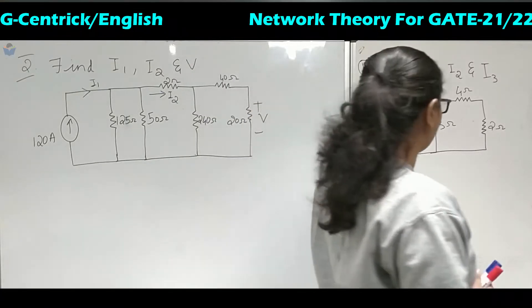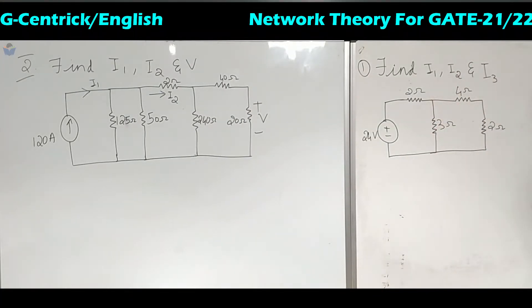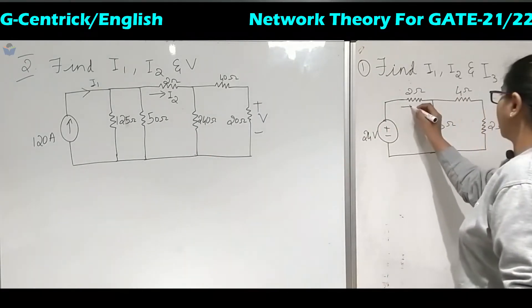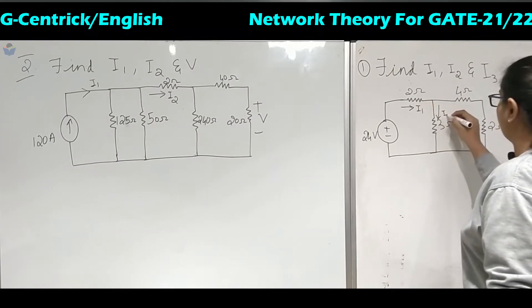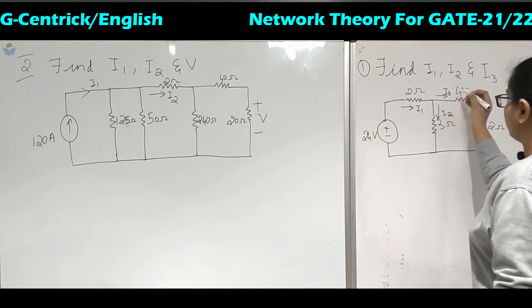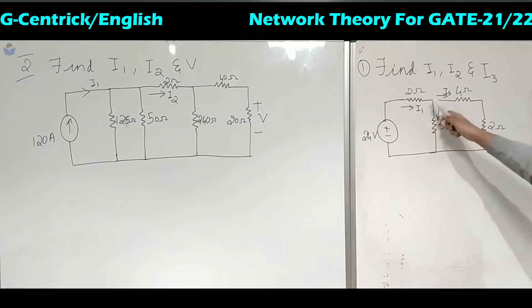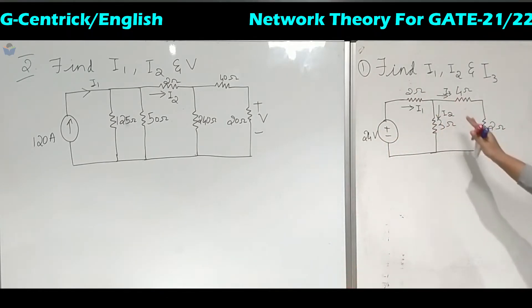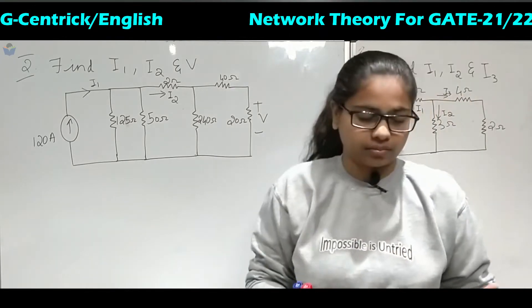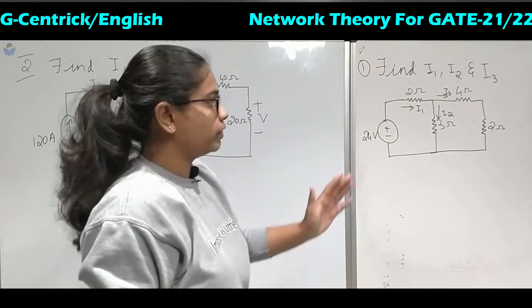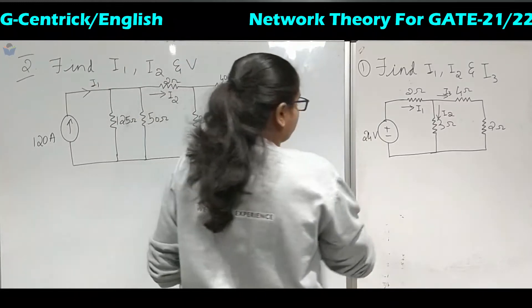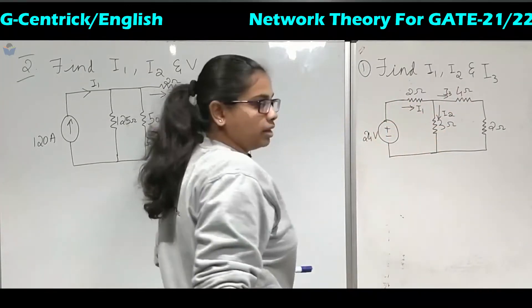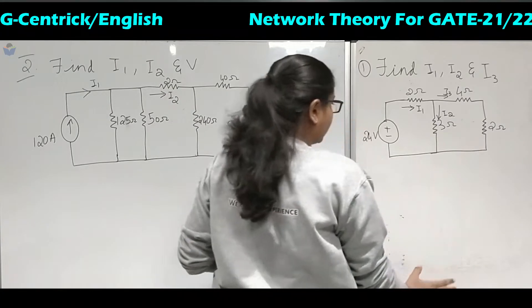Coming to the problems. The first problem is to find I1, I2, and I3. We need to calculate the values of these three currents. We will apply the current division rule — you can also apply KCL, but since we have learned the current division rule we will apply that. Now, one source is given; whenever there is one source in the circuit we have to find the total current using the reduction technique.